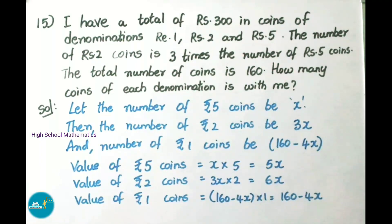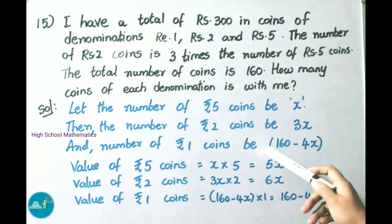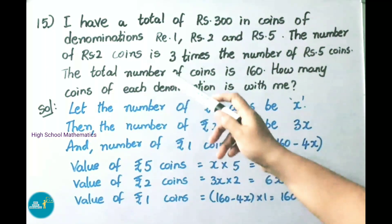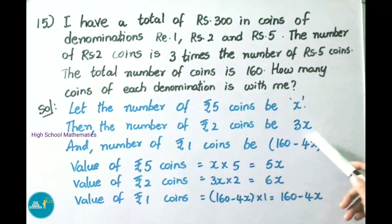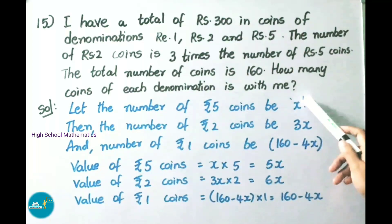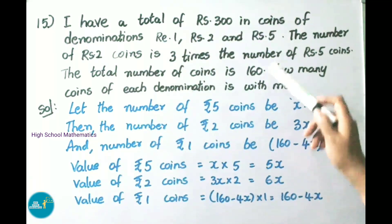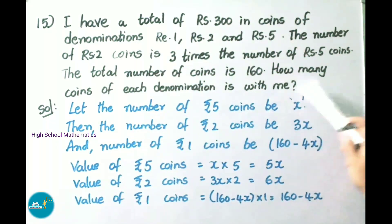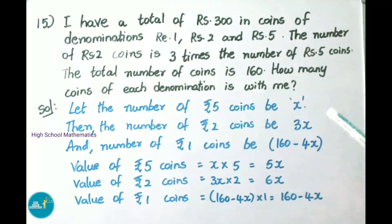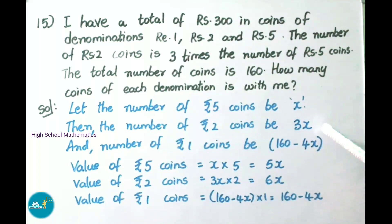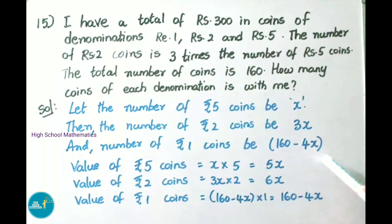Let us see the solution. Let the number of 5 rupee coins be x. Then the number of 2 rupee coins is 3x, because 2 rupee coins is 3 times the number of 5 rupee coins. The number of 1 rupee coins is the total coins minus 5 rupee and 2 rupee coins. That is 160 minus (x plus 3x), which equals 160 minus 4x.